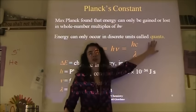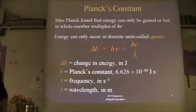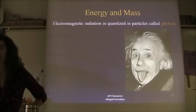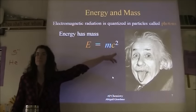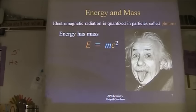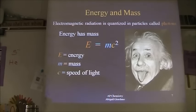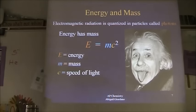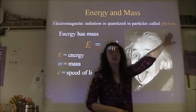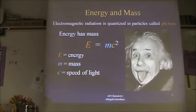The word 'quanta' will be discussed later. Einstein's equation E = mc² — where E is energy, m is mass, and c is the speed of light — is also useful, though not on your equation sheet. Now, electromagnetic radiation travels in a wave. What is actually traveling in that wave pattern? Photons. The word photon is a shortening of 'photoelectron.' A photon is an electron.